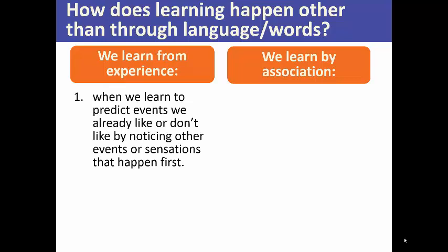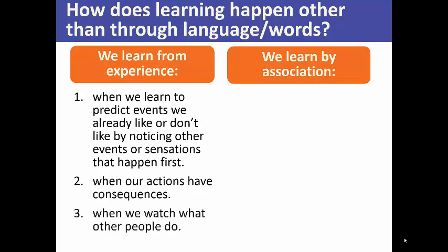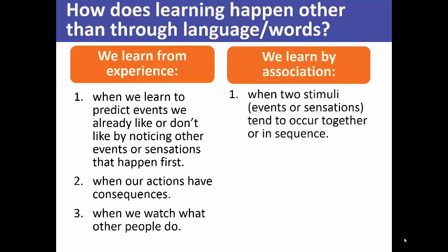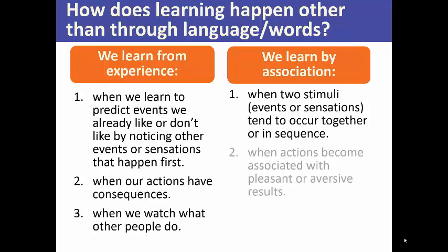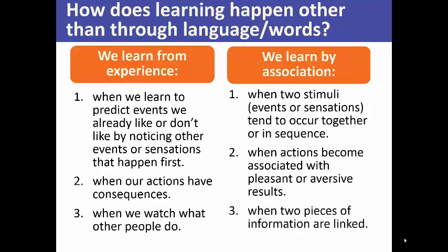When we learn to predict events we don't already like or don't like by noticing other events or sensations that happen first, we learn through experience. When our actions have consequences, that's why we engage in reward and punishment. And when we watch what other people do — that's called vicarious learning — that's how kids learn oftentimes by watching how other kids play. We also learn by association when two events or sensations or stimuli occur together or in sequence, when actions become associated with pleasant or aversive results, and when two pieces of information are linked together.